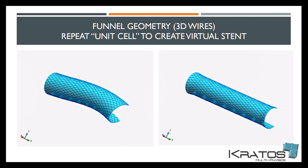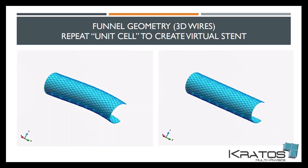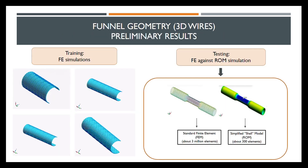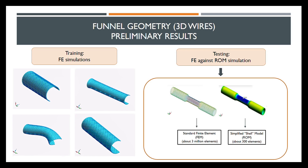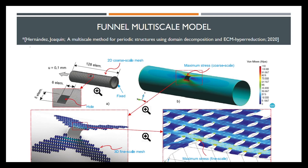After obtaining the stent by repetition of the cells, we performed several finite element tests, as you can see in this slide. We used this training to create a reduced order model based on domain decomposition with a coarse mesh of about 300 elements — far fewer than the 3 million elements of a standard finite element model. Moreover, we used several interesting tools given by the post-processor of GID, which allow us to analyze the results of different multiscale models performed for the stents.